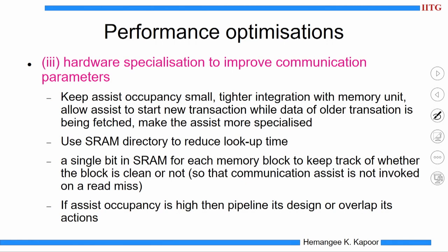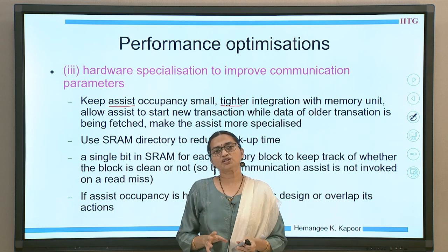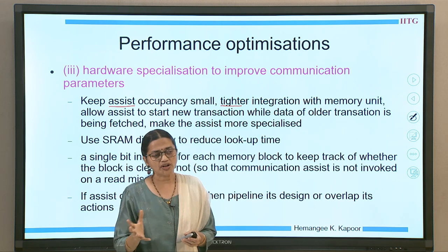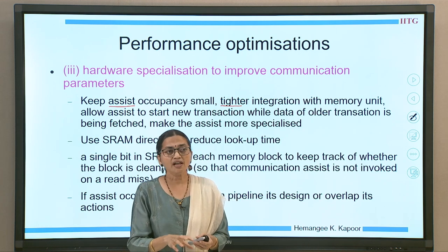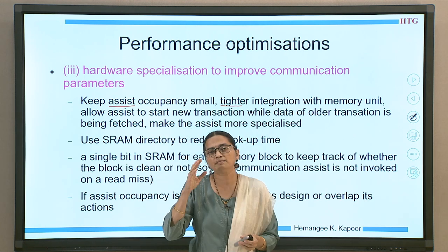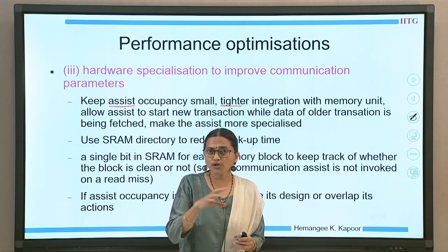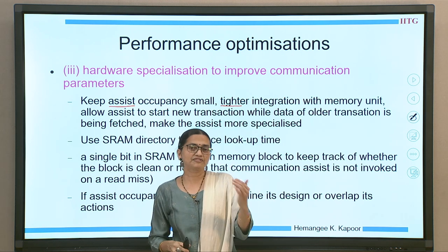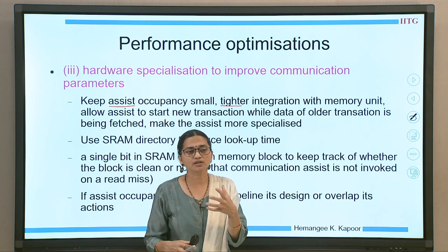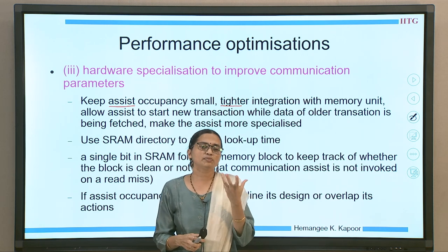The third optimization is hardware specialization to improve communication parameters. We want the communication assist to be involved for a shorter time — doing its work very quickly. When the CA receives a request from the network for a read, write, or any transaction, it must look up its directory and associated cache quickly. The memory, cache controller, and memory-related modules should be tightly integrated with the communication assist, giving the CA more direct access and control.